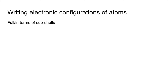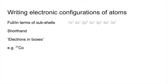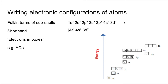We'll look at how to write electronic configurations. You can write them fully in terms of subshells, in shorthand, or in the electrons-in-boxes version. Using cobalt with its 27 electrons as an example: the full version lists all subshells. For shorthand, you go to the noble gas before the atom — argon in this case — then fill up from there: argon configuration, 4s2, 3d7. You can write these in any order. The electrons-in-boxes version looks like that — just be careful to apply Hund's rule in the 3d subshell.